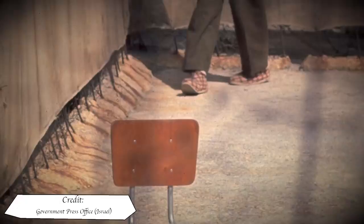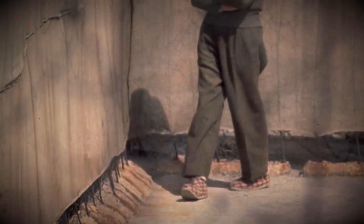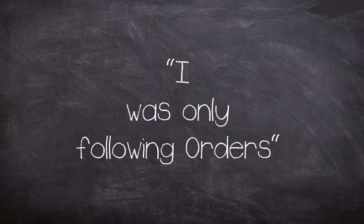What was interesting about the trial was that he claimed he had not dictated policy but only carried it out, and that he was merely a cog in the machinery of destruction. Essentially, the 'I was only following orders' defense. This highlights the question: is following an order enough to convince someone to do something so heinous?